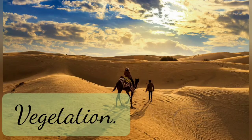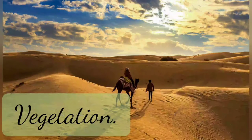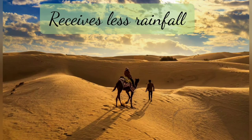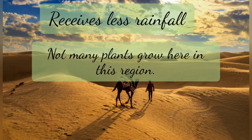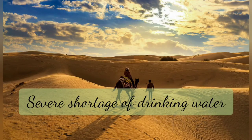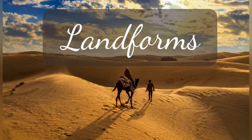So this was all about the vegetation of our Thar Desert. It receives very little rainfall, no plants grow because of the infertile land, and only sandy soil is there with extreme shortage of water. The shortage is so severe that even the people living there do not have enough water to drink for their daily lives. Let us move forward to landforms.